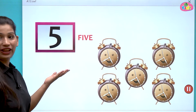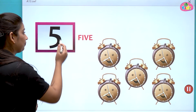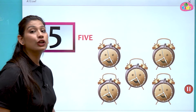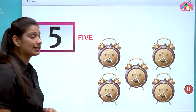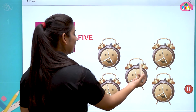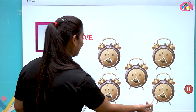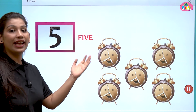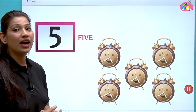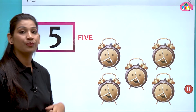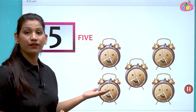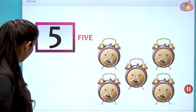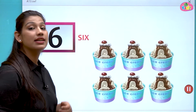After four comes number five. This is number five. Here you can see clocks — let us count: one, two, three, four, five. There are five clocks. The spelling is F-I-V-E, five.